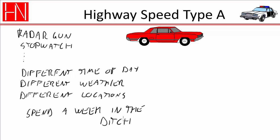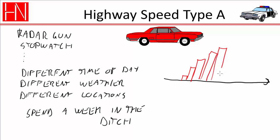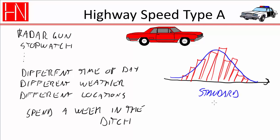To get our measurement data and a representative sample of the speed amongst cars at different times of day, different weather conditions, and on different highways, we might take our measured data and put it in a histogram. From that, we can come up with a distribution and then calculate a standard deviation out of that data.